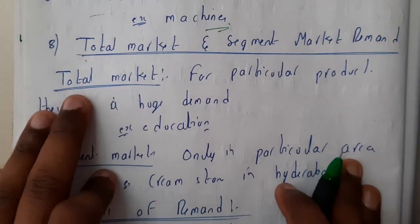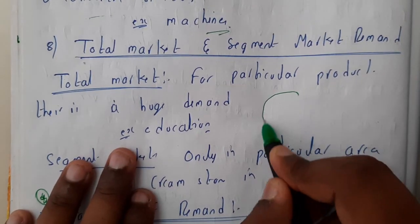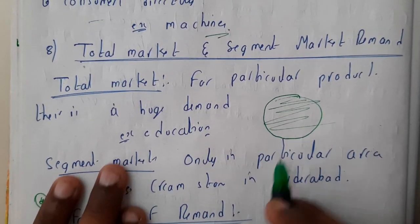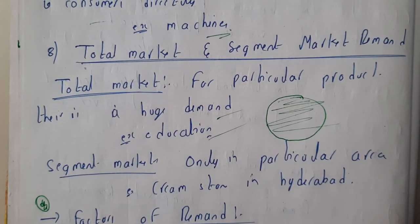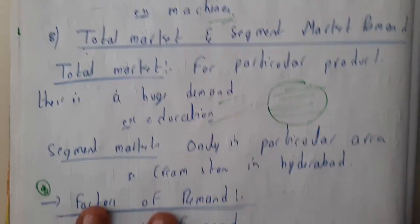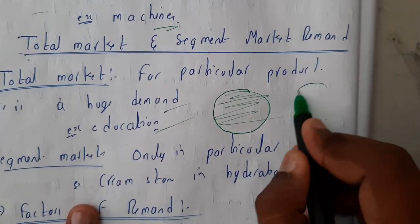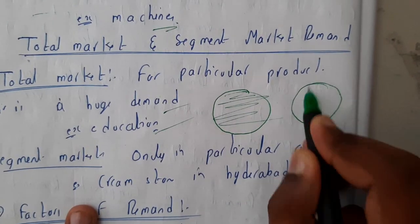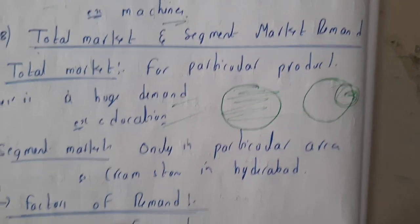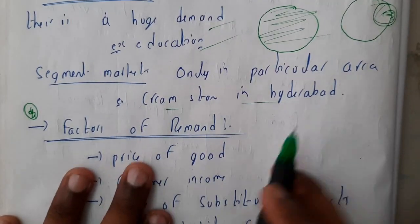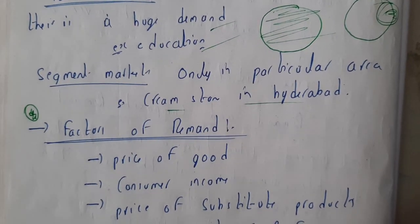Total market demand is uniform all over the place — for example, educational demand across India. Segmented demand is when in a larger area, a small part has high demand for a specific product — like Creamstone in Hyderabad.